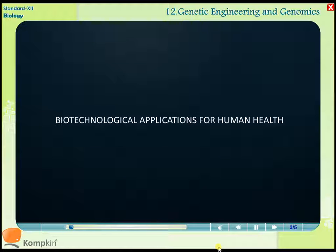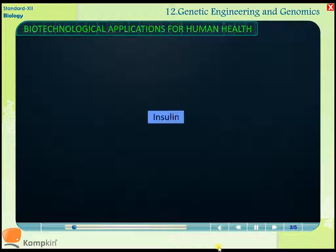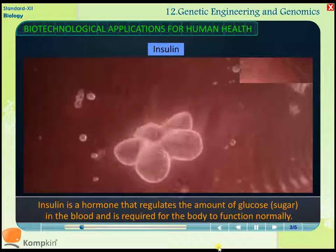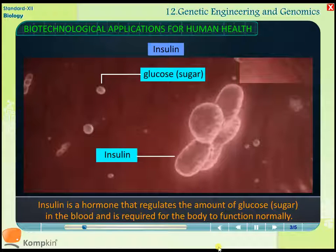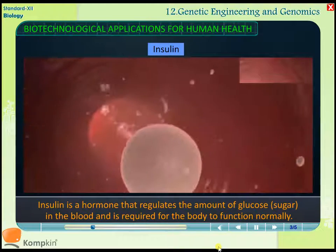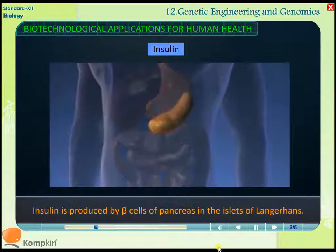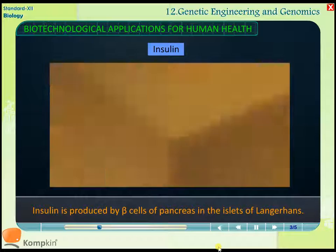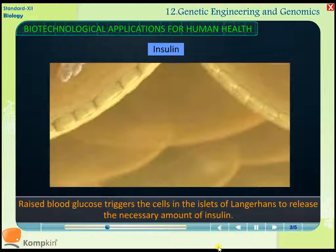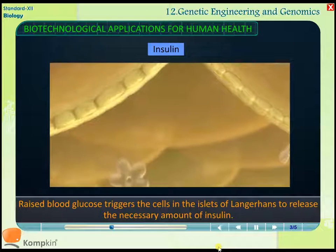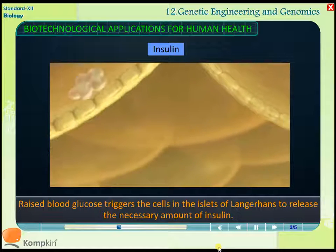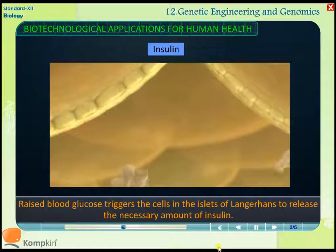Biotechnological applications for human health. Insulin is a hormone that regulates the amount of glucose, or sugar, in the blood, and is required for the body to function normally. Insulin is produced by beta cells of the pancreas in the islets of Langerhans. Raised blood glucose triggers the cells in the islets of Langerhans to release the necessary amount of insulin.